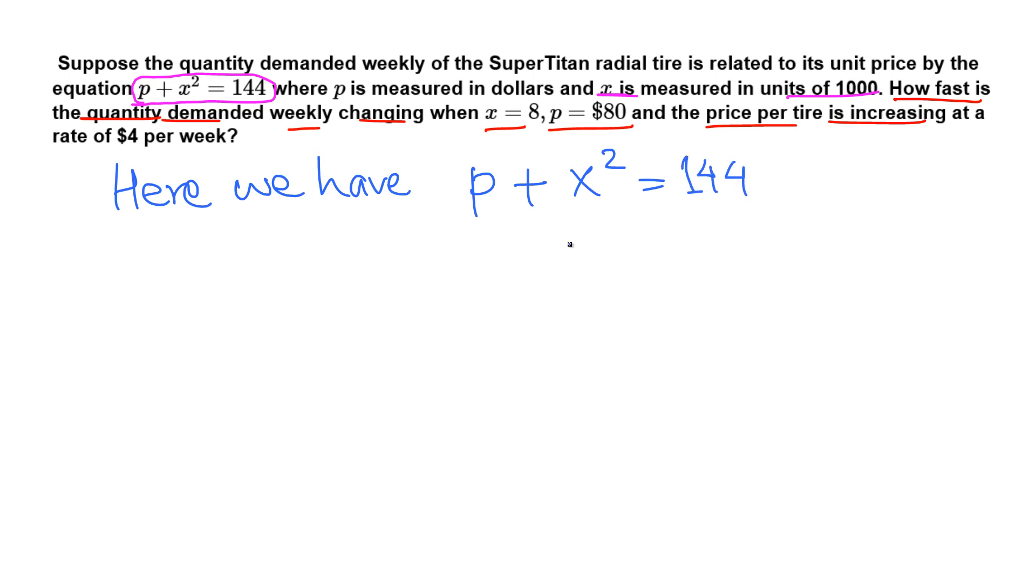So we use this equation, we differentiate both sides with respect to time t and go from there. And how fast is the quantity demanded weekly changing? So this is the question: dx over dt equals what? Price per tire is increasing, so price dp over dt, that is $4 per week, and we are given these two things.